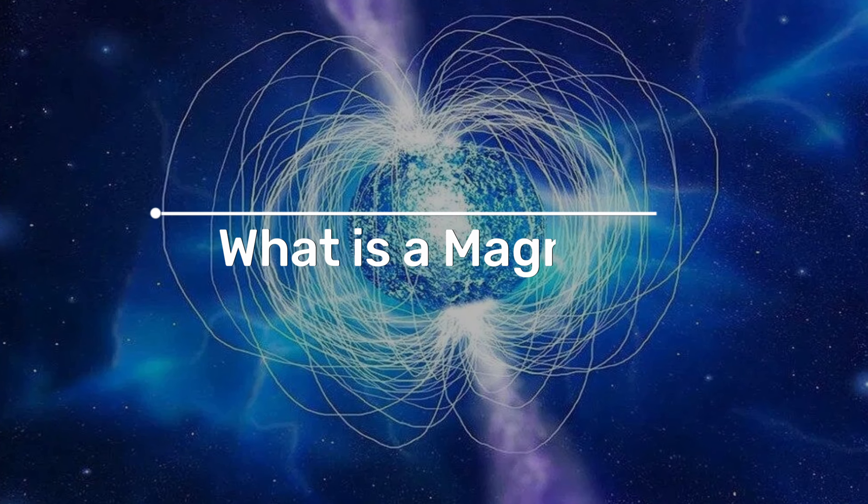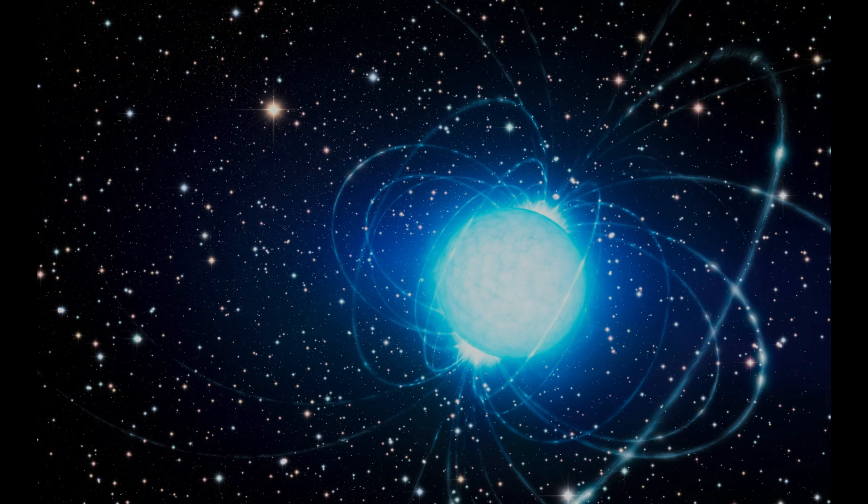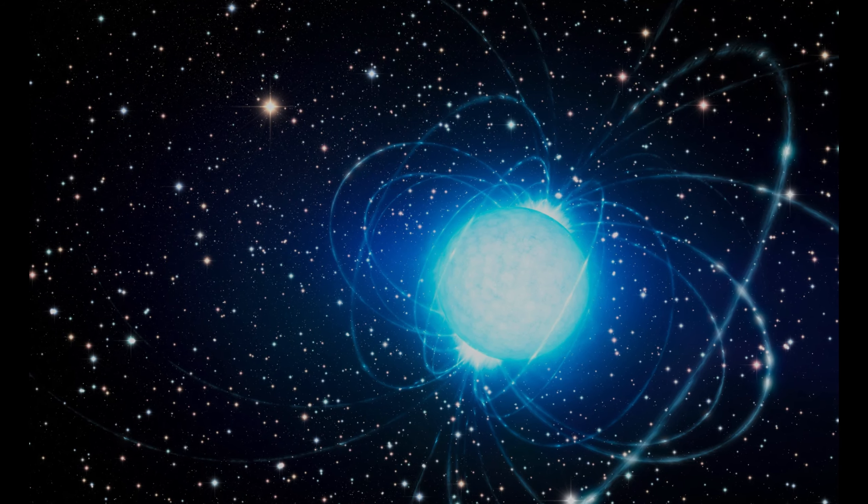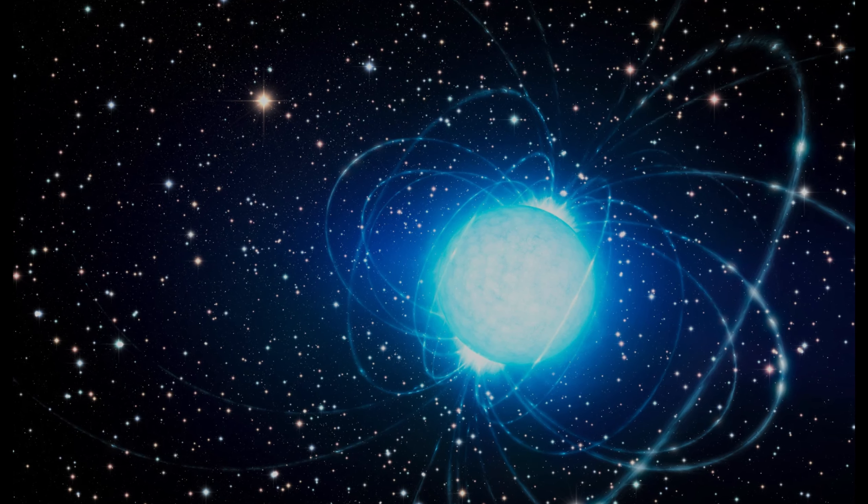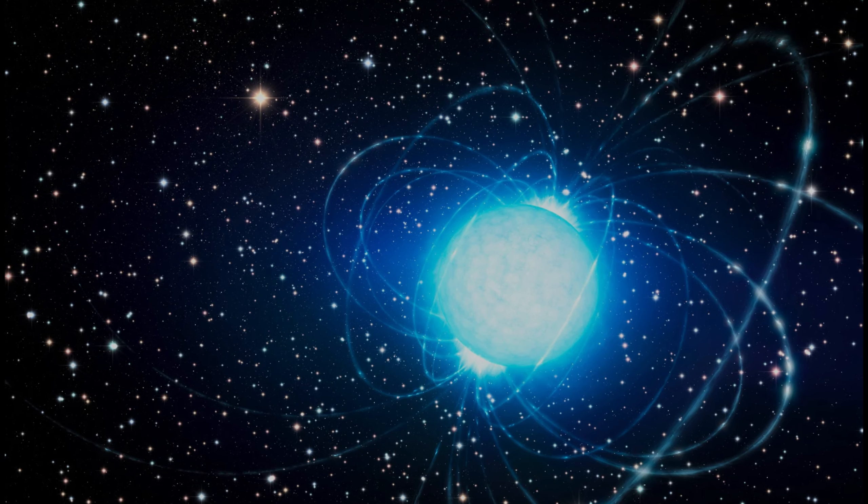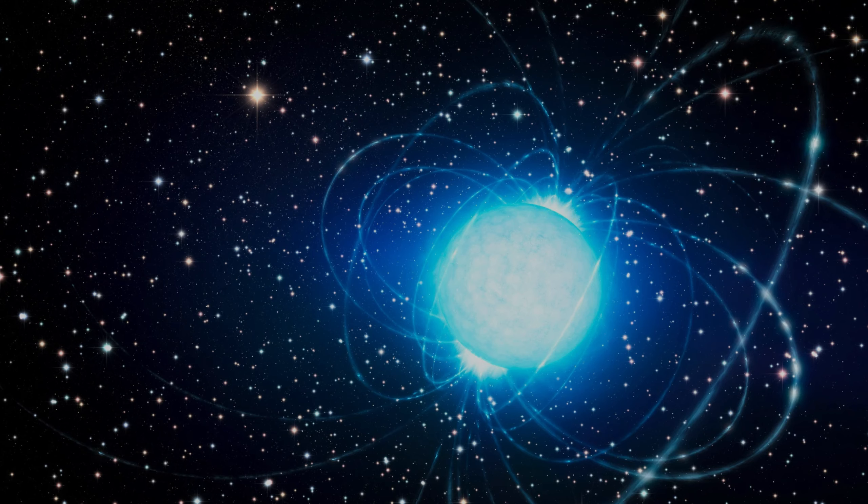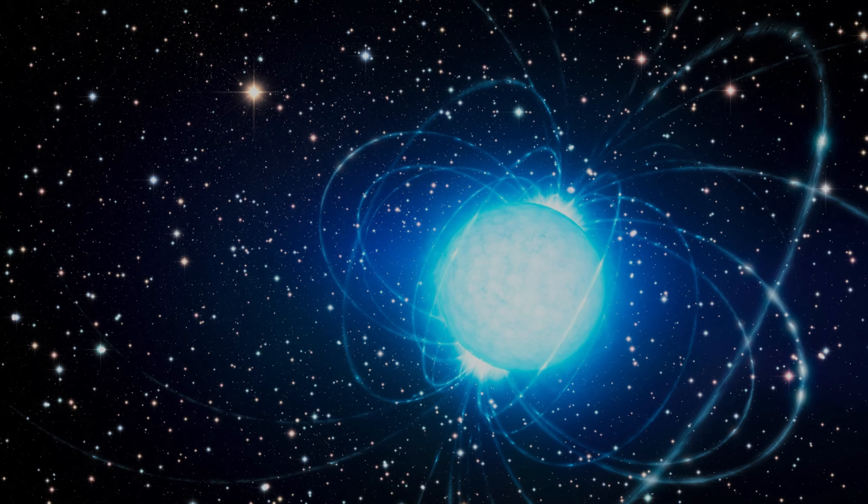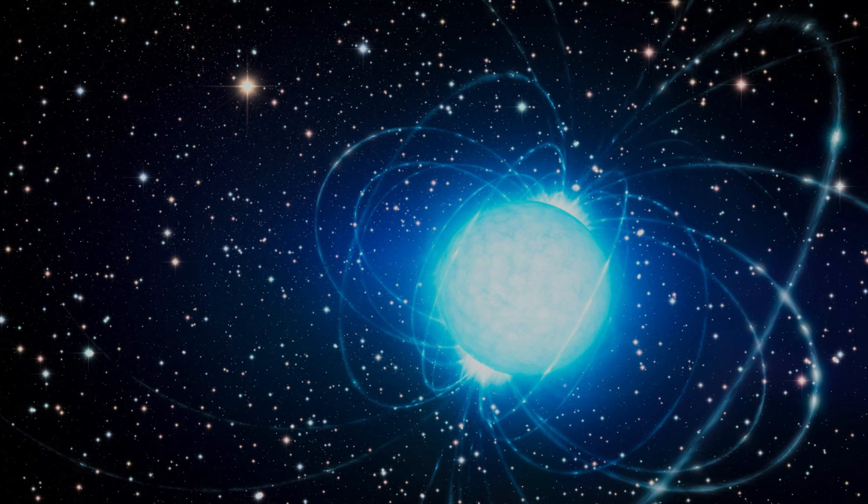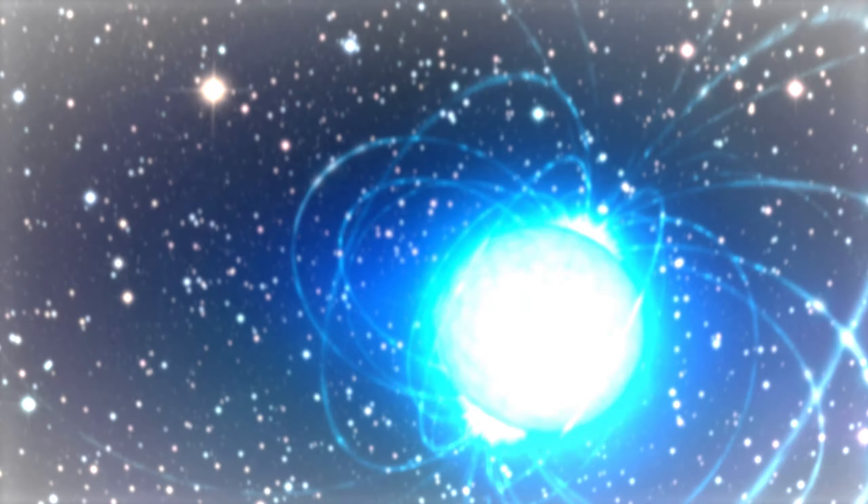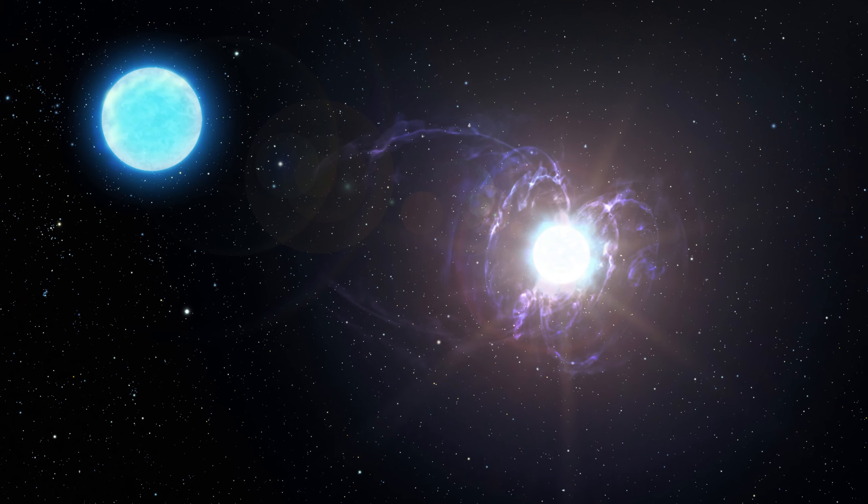What is a magnetar? A magnetar is a type of neutron star, the remnants of a massive star that has gone supernova. But what sets magnetars apart from other neutron stars is their incredibly strong magnetic fields. These fields are about a thousand times stronger than those of typical neutron stars, making magnetars the most magnetic objects in the universe.